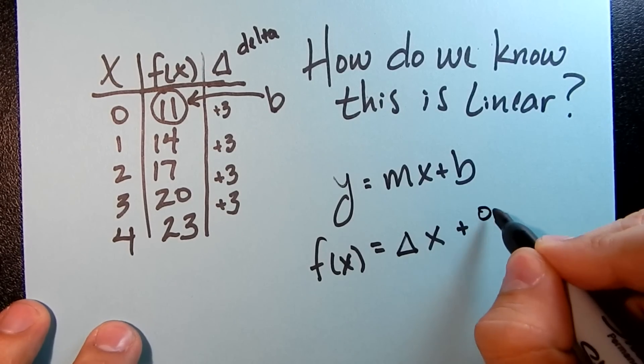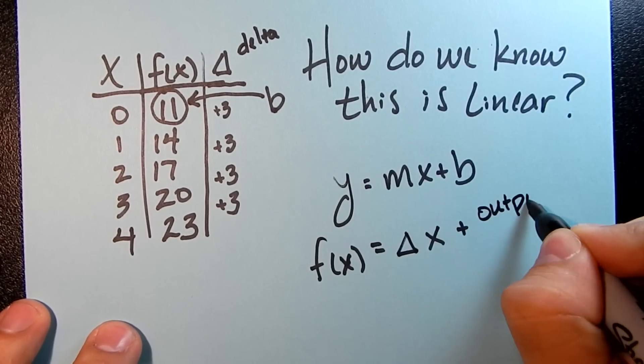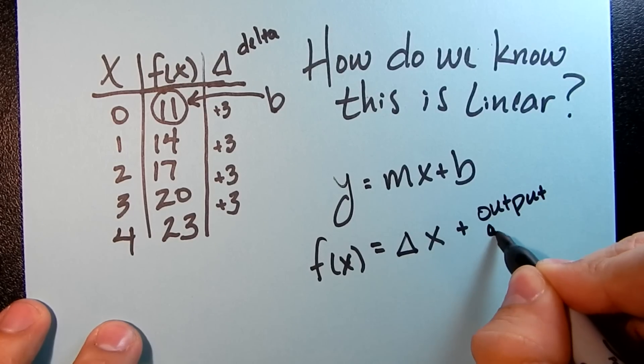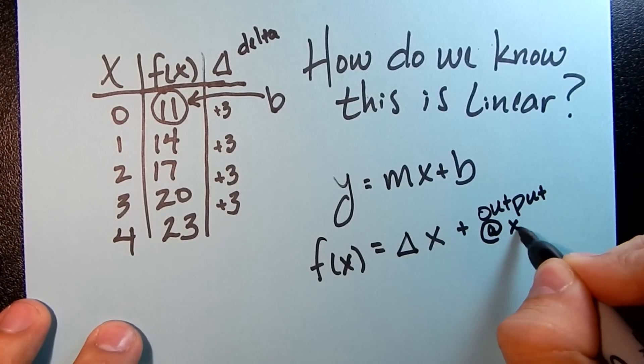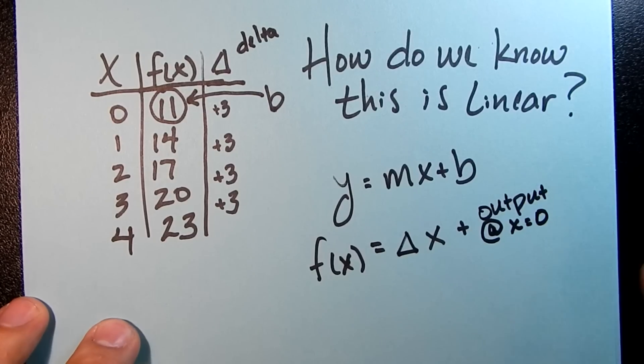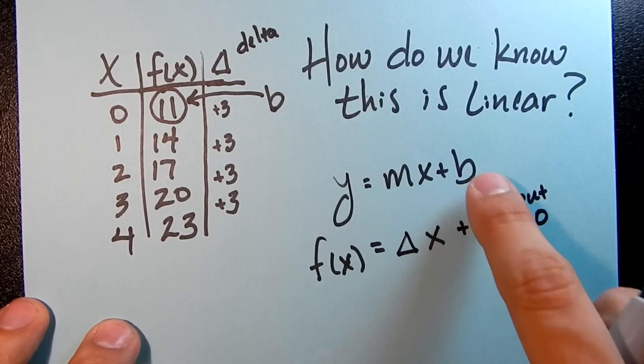But we will think about this in our general form. Is your output at x equals 0. So when x equals 0, that is your b term.